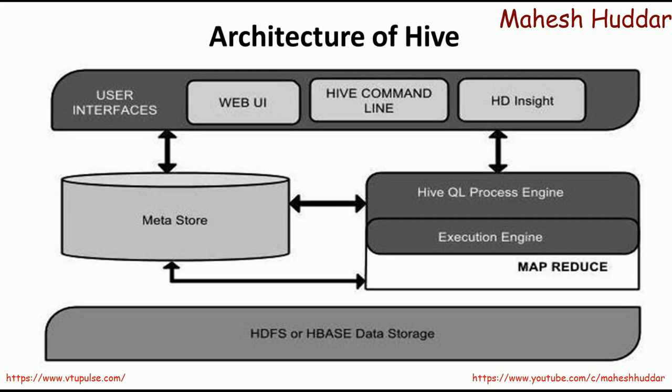The HiveQL process engine is the component used to process HiveQL queries. If a user has written HiveQL queries and wants to execute them on an HDFS cluster directly, it is not possible — HDFS understands only MapReduce programs. So the HiveQL queries must be converted into MapReduce programs, and then the MapReduce program can be executed on HDFS. That is where the execution engine comes in. The execution engine converts the HiveQL queries into MapReduce programs, executes them on HDFS or HBase data storage, and then converts the result back into HiveQL results, which are given back to the user through the user interface.